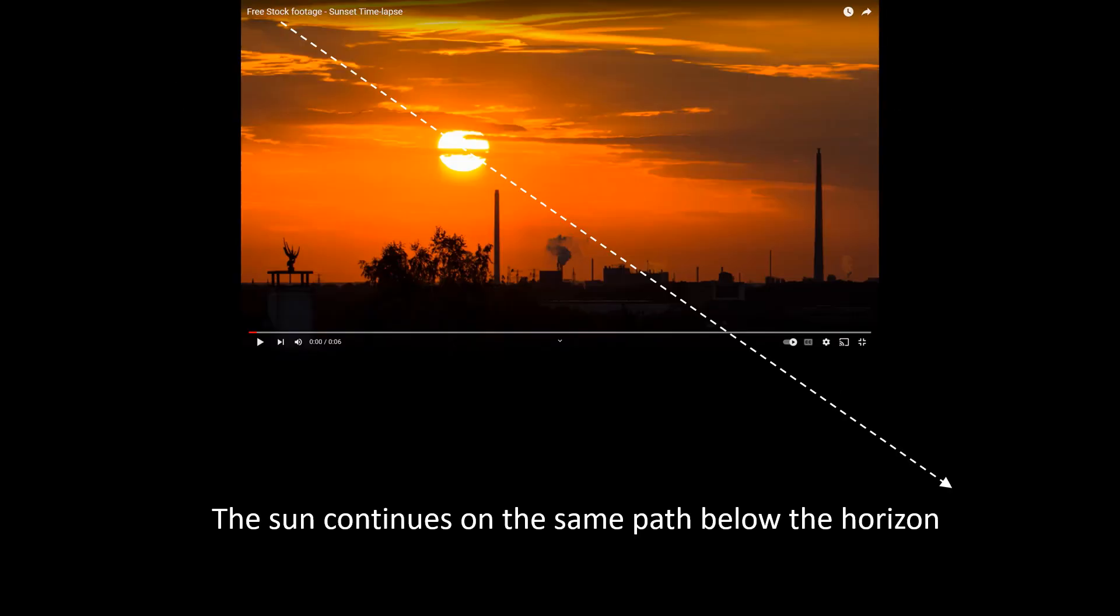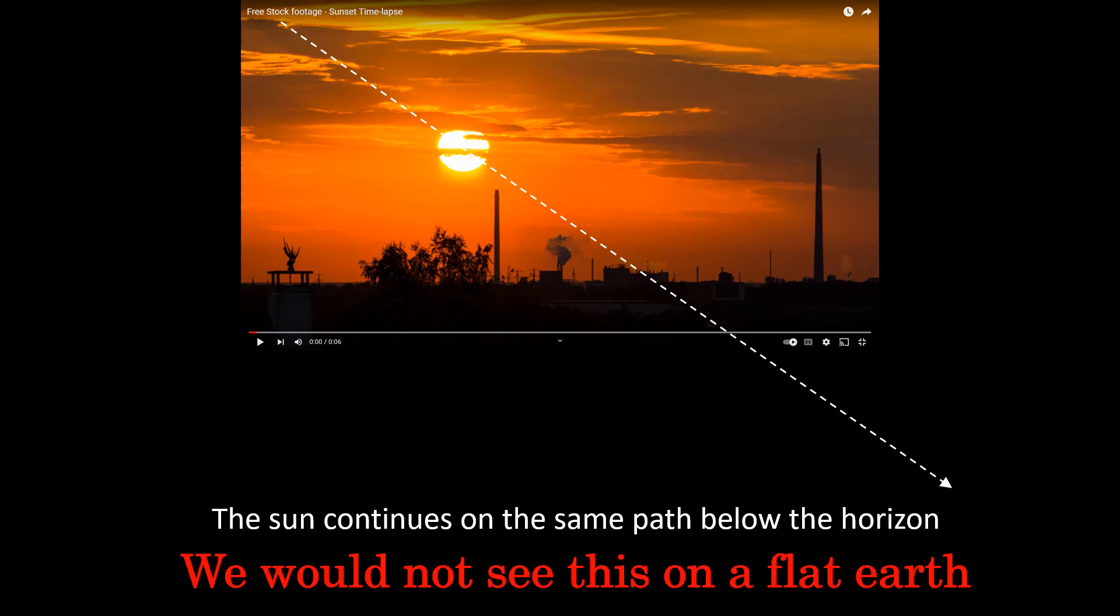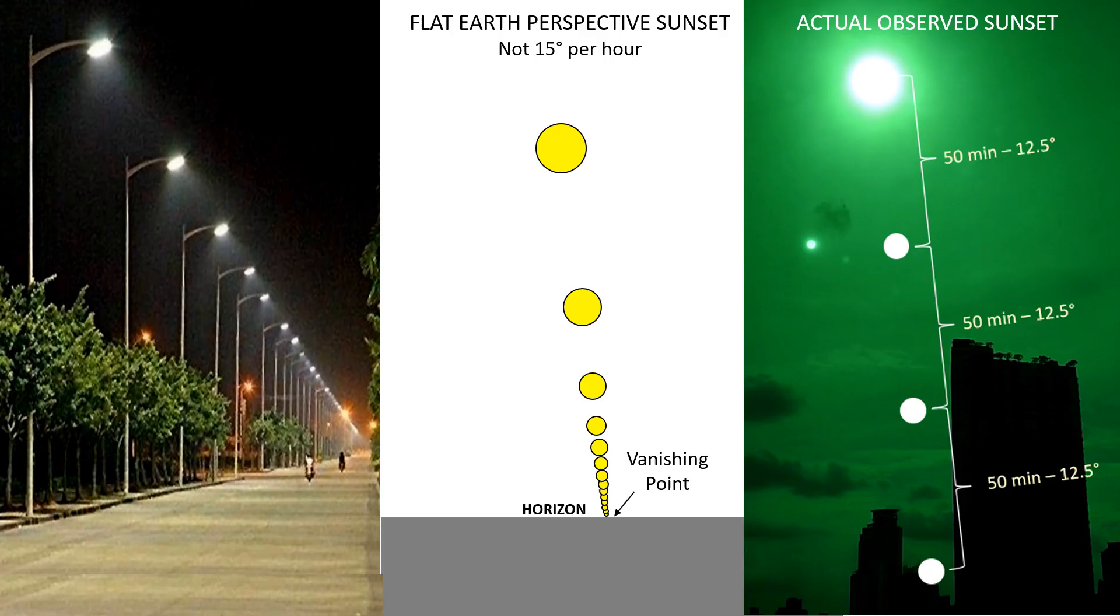So let's review what I showed in these videos. First of all the Sun continues on the same path below the horizon. And we would not see this happen on a flat Earth. Now flat earthers are right and the Sun does set due to perspective like a row of streetlights then we should see this. But as my timelapses show the Sun moves across the sky at a constant rate. Plain and simple we do not see this.